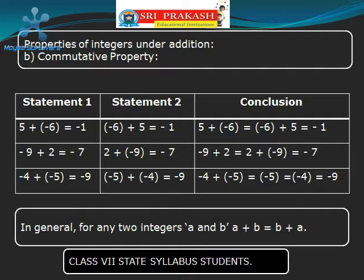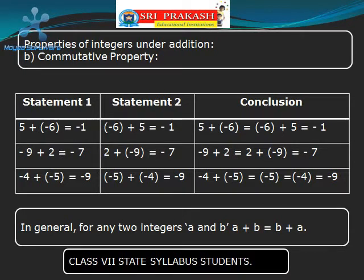Our conclusion is: though we interchange the integers 5 and 6 and add, the result is the same, minus 1. Now let us take two integers minus 9 and plus 2 and add them. We get minus 7. Now let us interchange them: first take 2 and next take minus 9 and add. We get minus 7. That means though we interchange the integers minus 9 and 2, the result is the same.